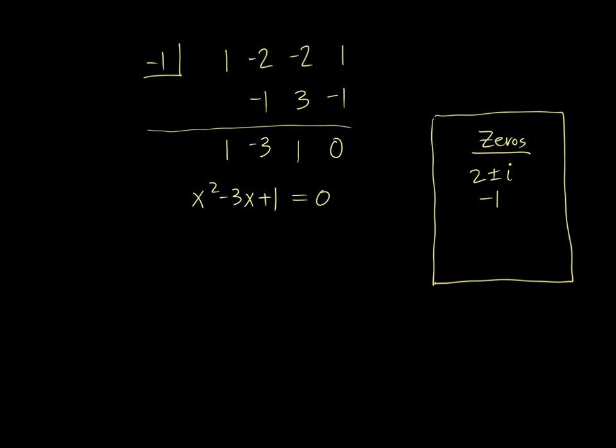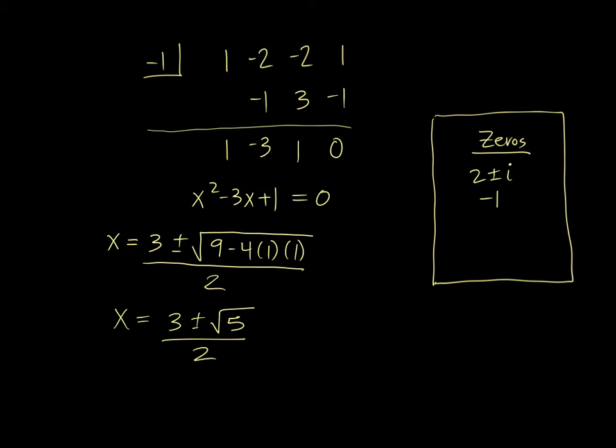In order for this to factor, if it's going to have nice neat zeros, rational zeros, then this should factor. I cannot think of any two factors of positive 1 that add up to negative 3, which means the quadratic formula is our only hope. So negative b is a 3, plus or minus the square root. b squared is 9, minus 4 times a times c, all over 2a. So 3 plus or minus the square root of 9 minus 4 is 5, all over 2.